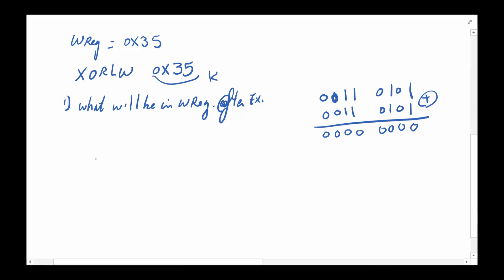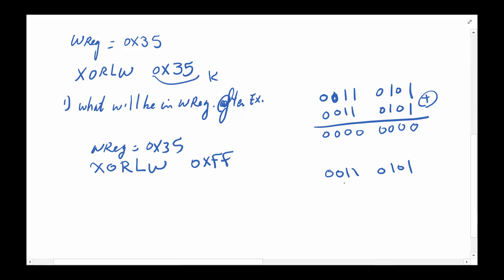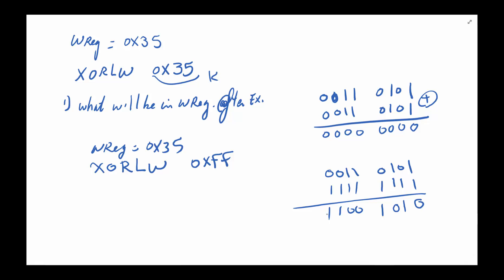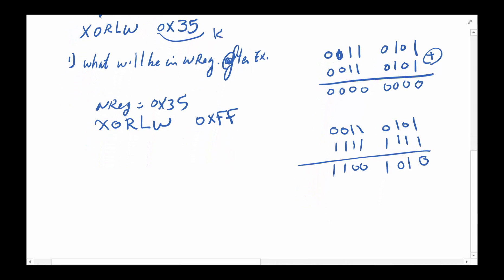What if we take the same W register — still set to 35 hex — and execute XORLW with 0xFF? Placing 1111 1111 into XOR means wherever the original number had a 1 it goes to 0, and wherever it had a 0 it becomes a 1. This is called a toggle — every bit flips. So if you want to toggle every bit, the easiest way is to exclusive OR with 0xFF.